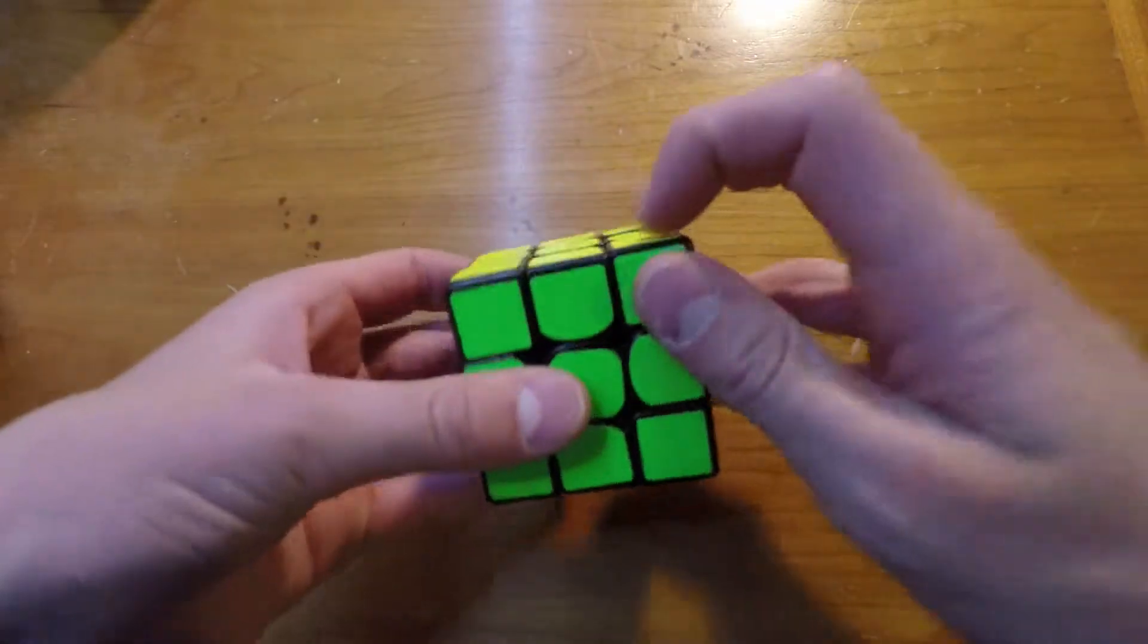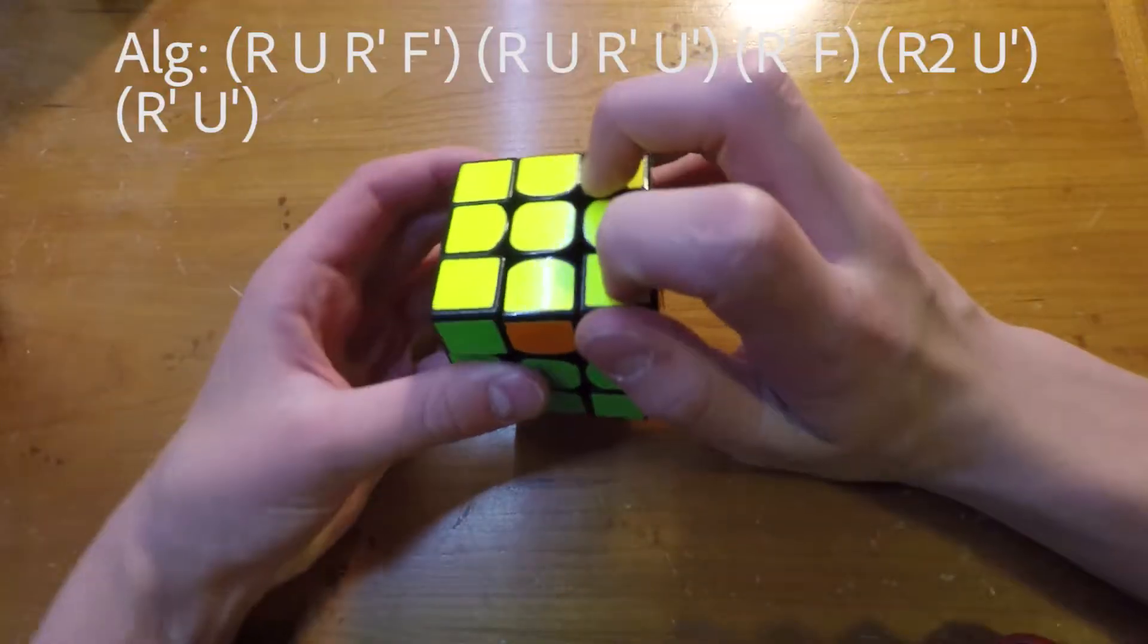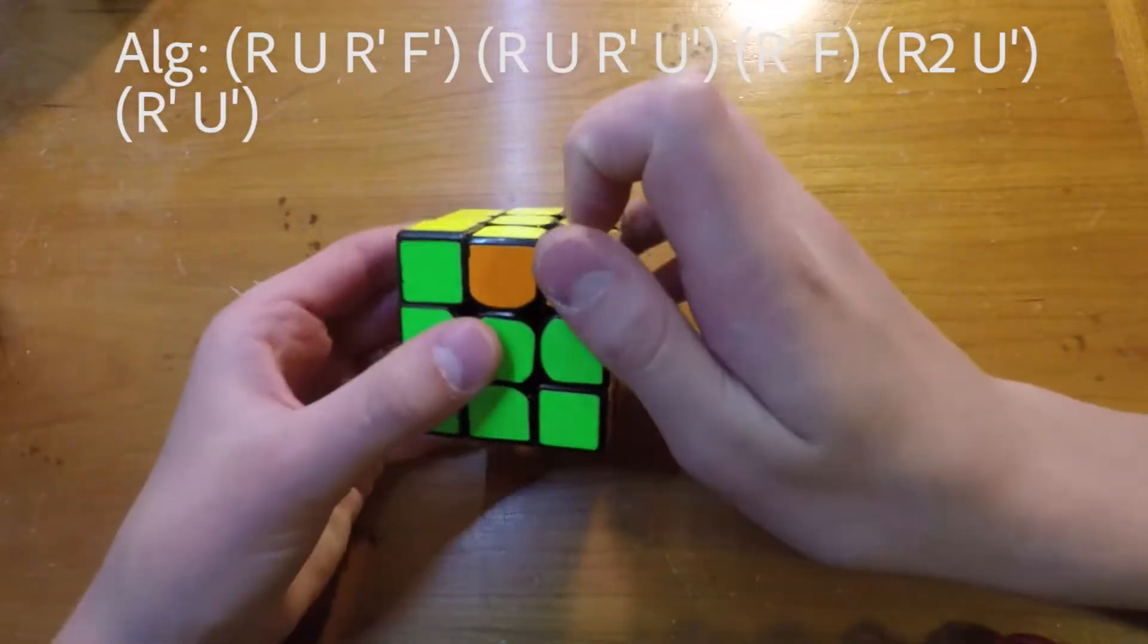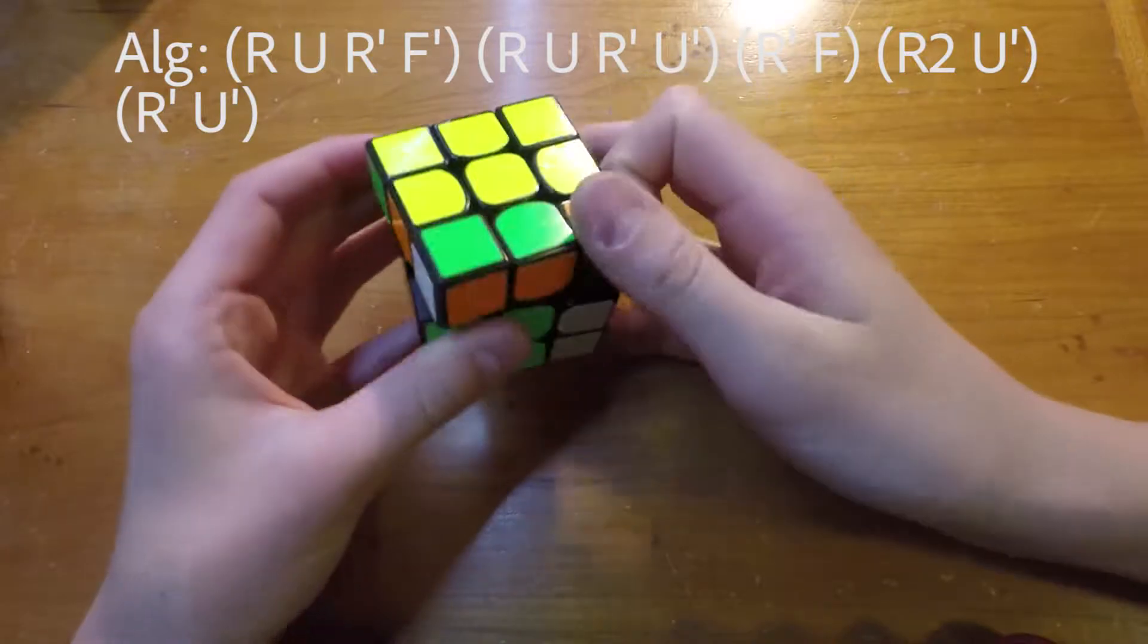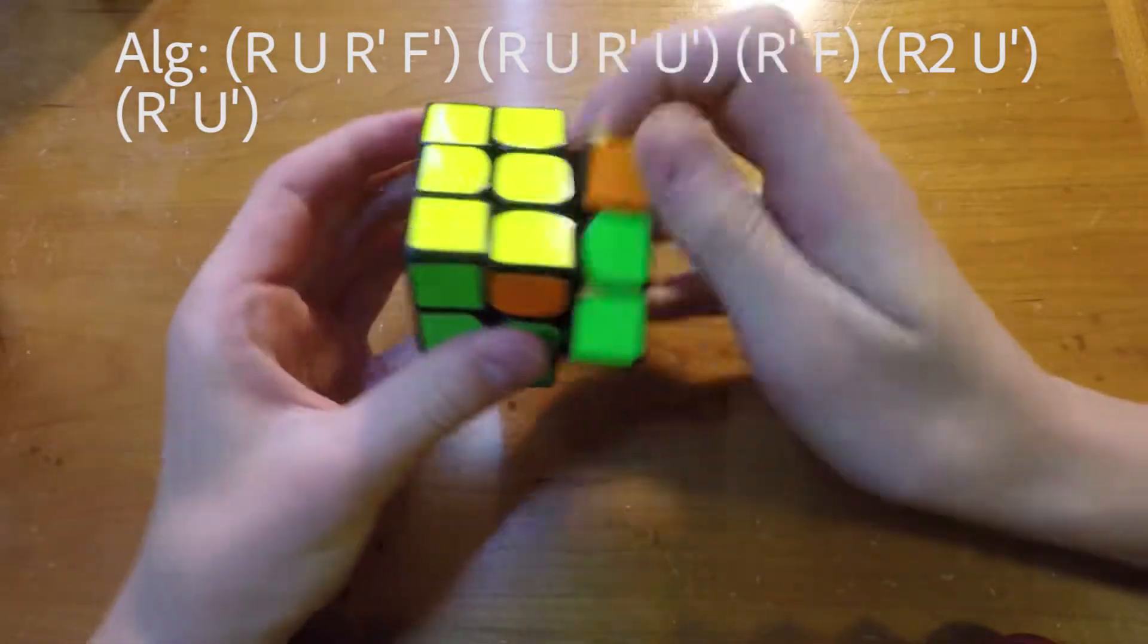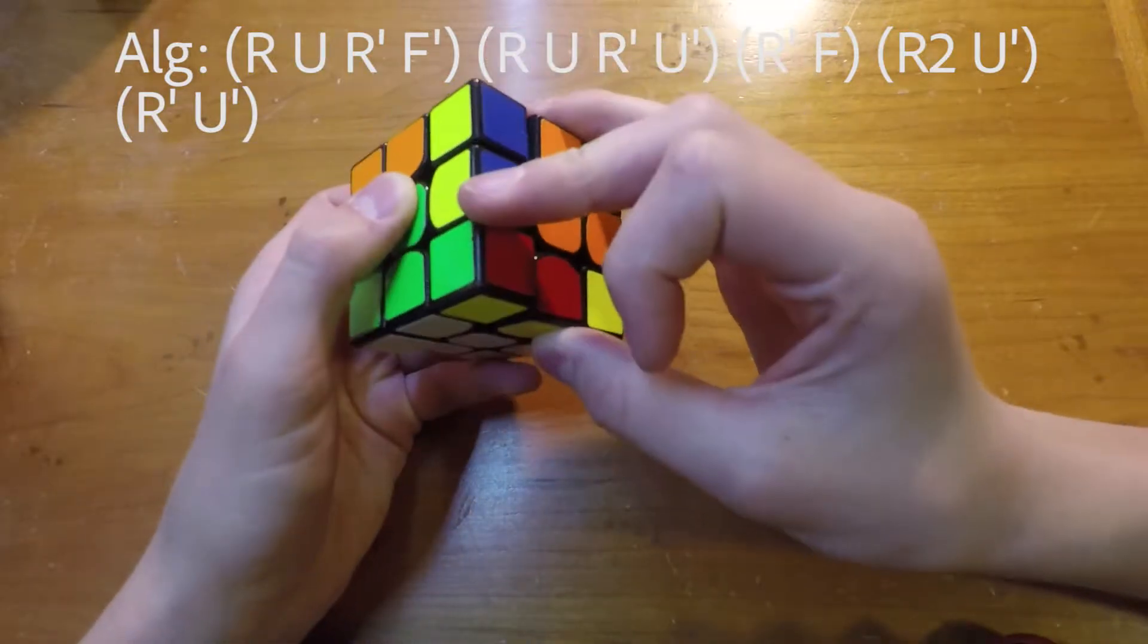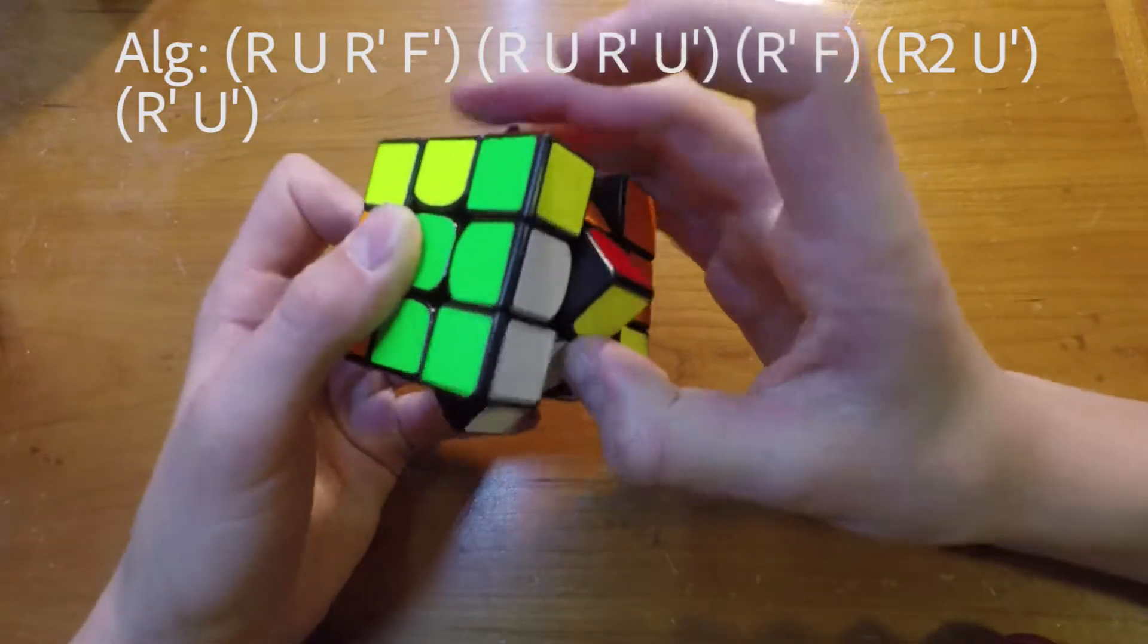Okay, so the way that I finger trick the J-perm is like this. Basically what I'm doing is I'm grabbing this corner with this hand and dragging it around. I use my middle finger to do that F-move right there.